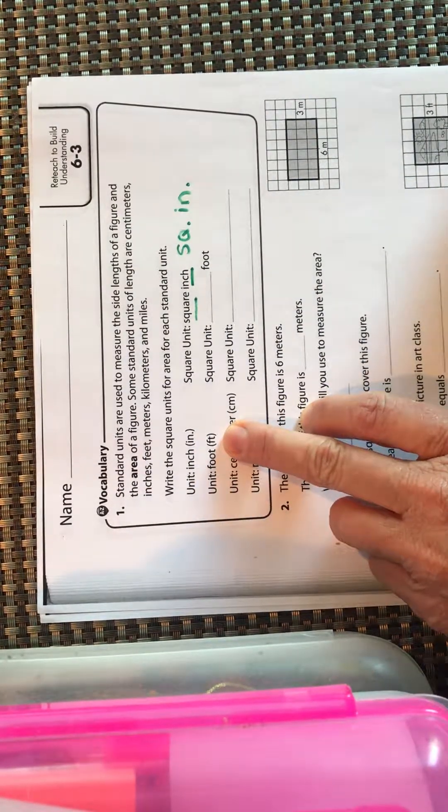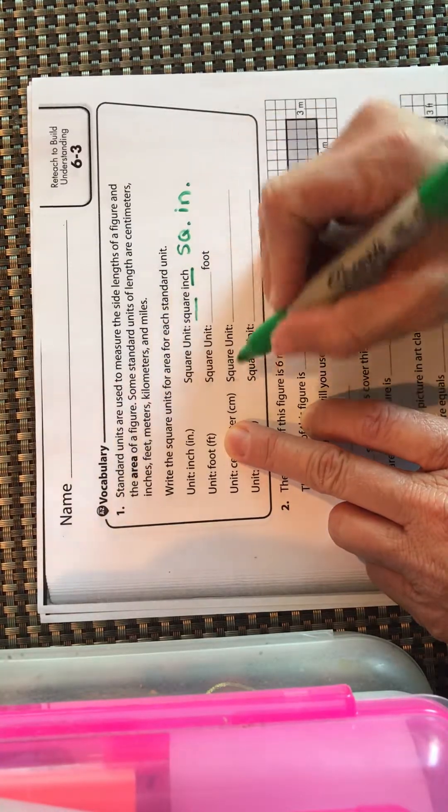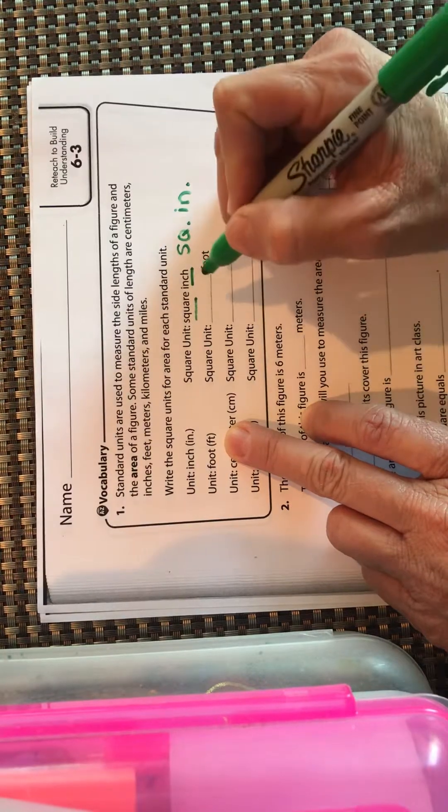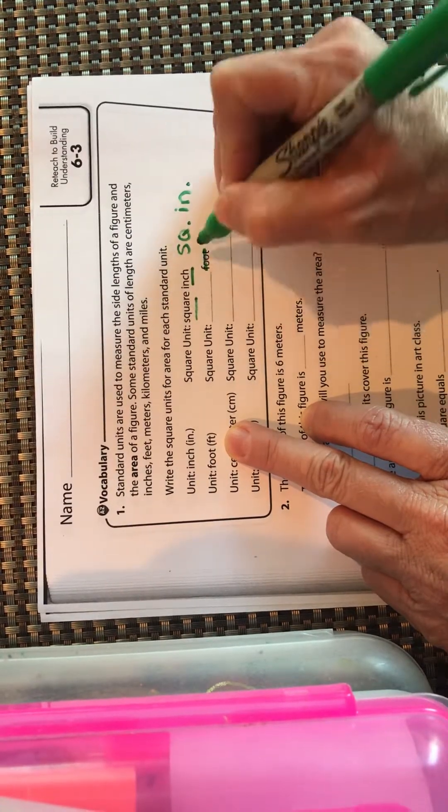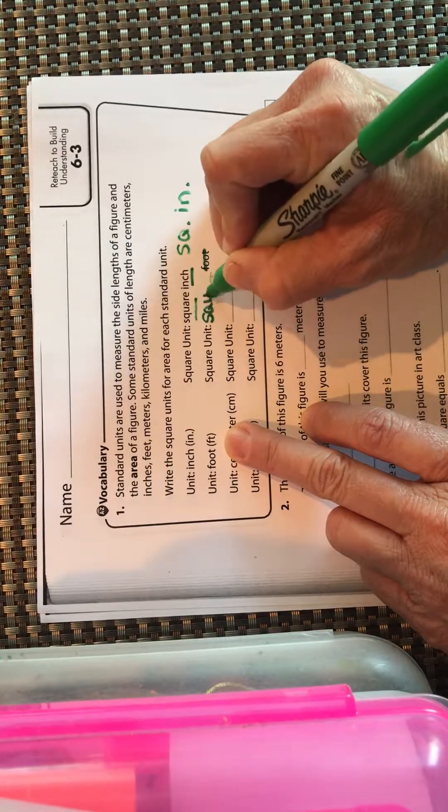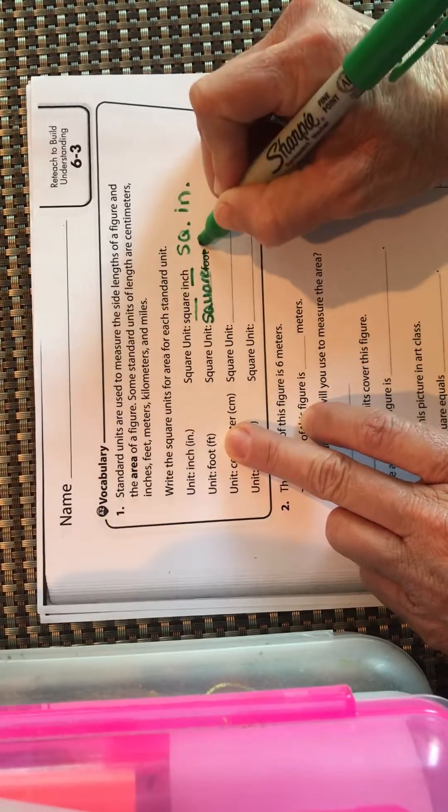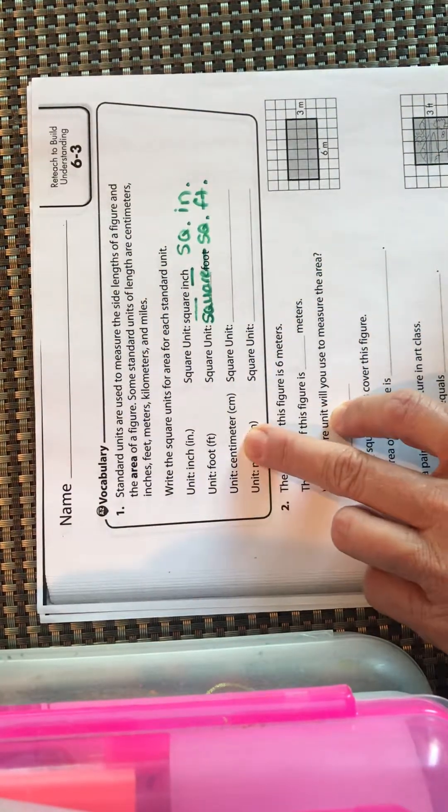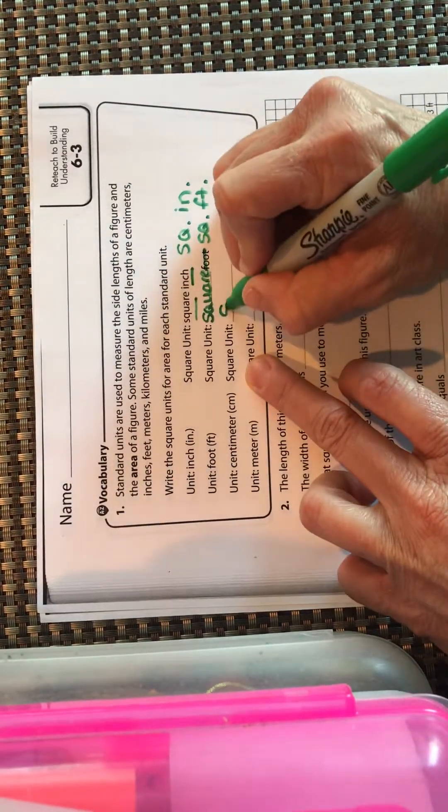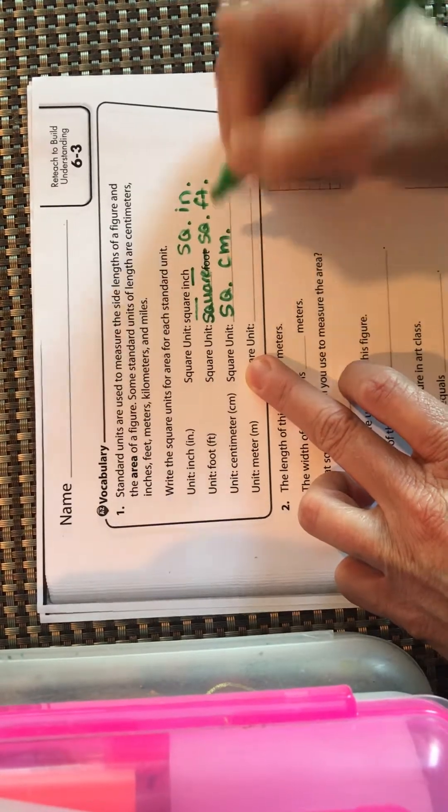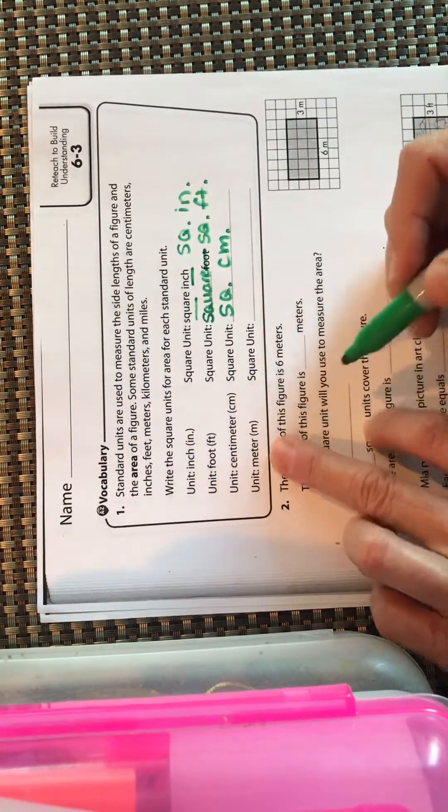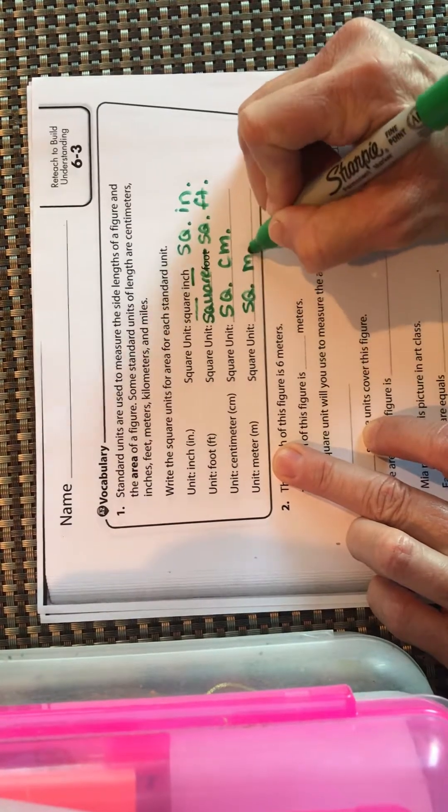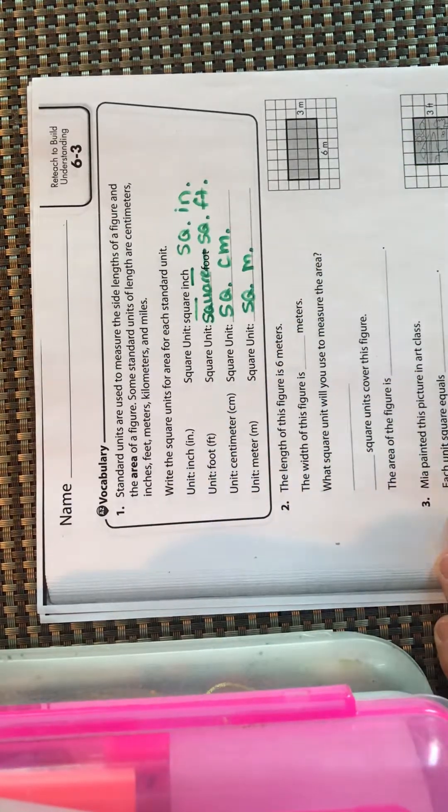We have one foot, we would call that square unit square feet, or one square foot. You could write square feet or abbreviate it square feet. A centimeter you would call it a square centimeter. CM stands for centimeter, and a square unit would be square meters. Abbreviation for meter is just an M.